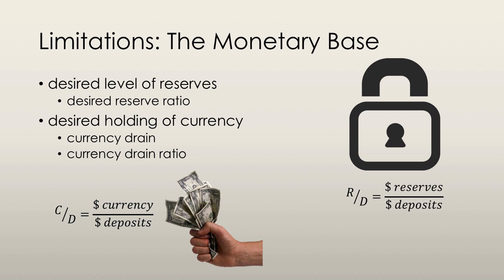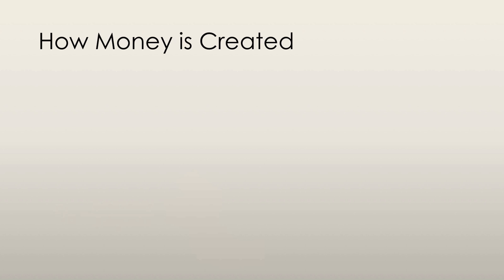This is known as currency drain. Currency drain is the leakage of bank reserves into currency, and the currency drain ratio is the ratio of currency to deposits. The money creation process begins with an increase in the monetary base. This occurs if the central bank conducts open market operations — for example, an open market purchase — where it pays for securities with newly created bank reserves.